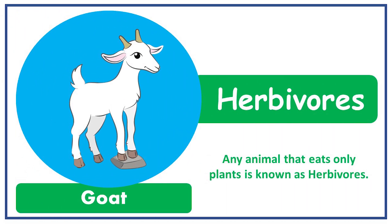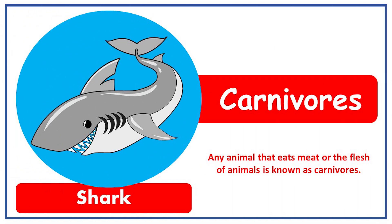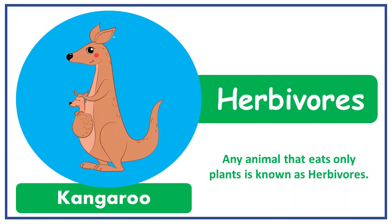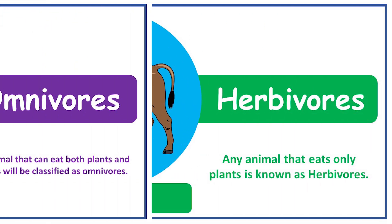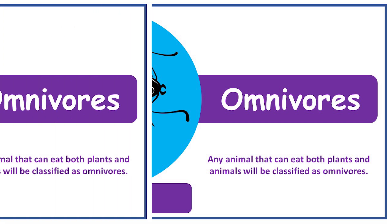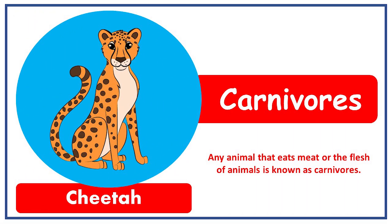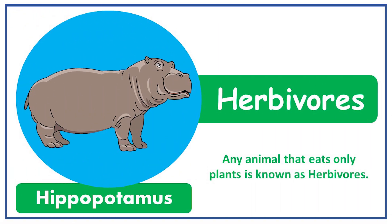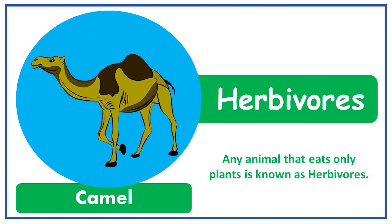Goat is herbivorous. Shark is carnivorous. Kangaroo is herbivorous. Buffalo is herbivorous. Ant is omnivorous. Crow is omnivorous. Cheetah is carnivorous. Hippopotamus is herbivorous. Camel is herbivorous.